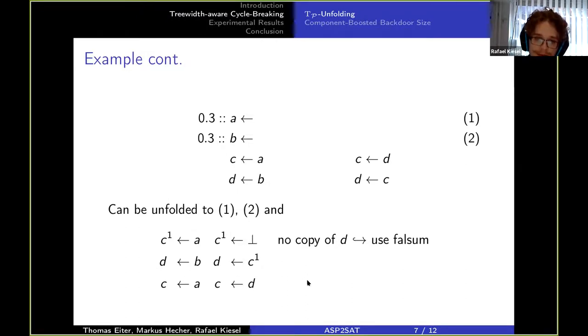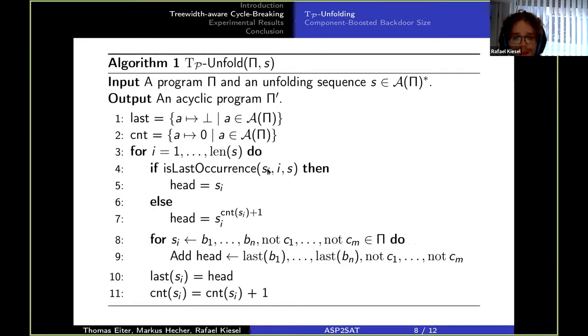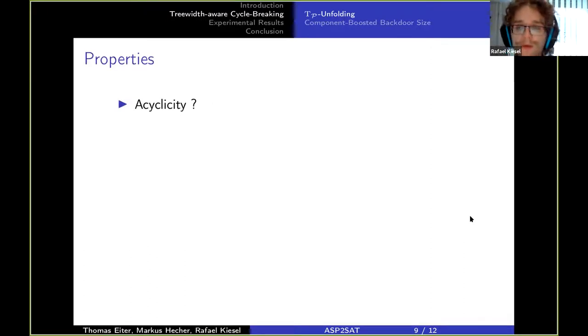And what we see is if we take away these superscripts right here, the programs have the same answer sets on the original atoms. Generally we have this algorithm here that takes an unfolding sequence, so a sequence of the atoms in pi, and unfolds the program. And actually the main part of this algorithm is somewhat simple, namely it takes all the rules that have the current atom in the head, puts a copy of the atom instead of the original atom.